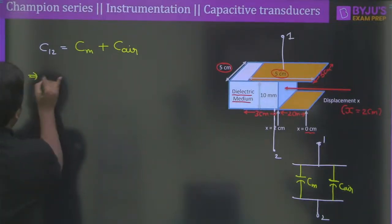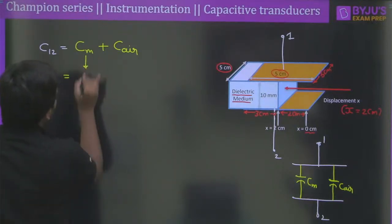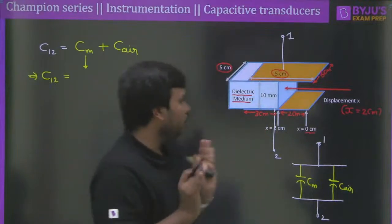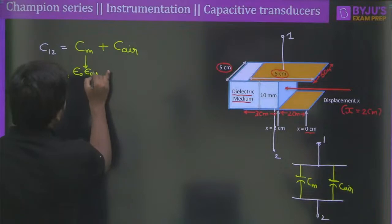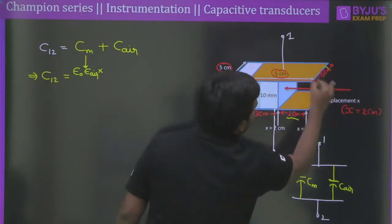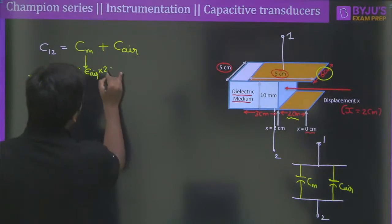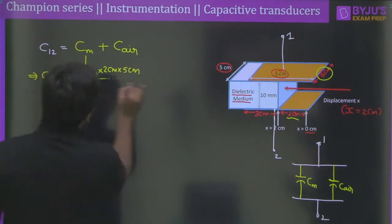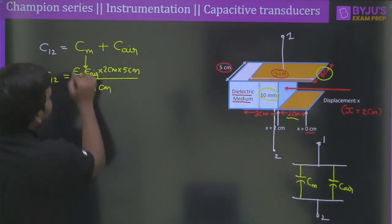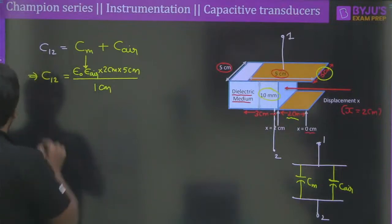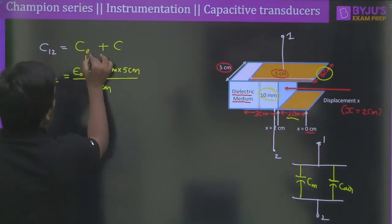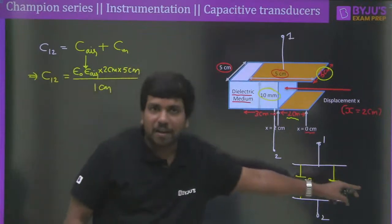C₁₂ = Cₘ + C_air. For the air capacitor: C_air = ε₀ · εᵣ(air) · (2 × 5) / 1 cm. For the dielectric capacitor: Cₘ = ε₀ · εᵣ(medium) · (3 × 5) / 1 cm. Because both capacitors are in parallel we add them. The 1 cm in the denominator cancels, leaving C₁₂ = ε₀ · [1 · 10 + 4 · 15] × 10⁻² m².